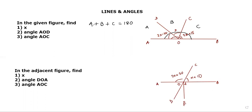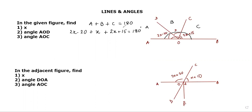Now, if the angles are given we can put them into this equation and solve for x. Angle a is 2x minus 20, angle b is x, and angle c is 2x plus 50. So the equation is: (2x − 20) + x + (2x + 50) = 180 degrees.